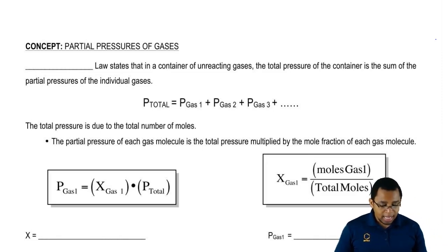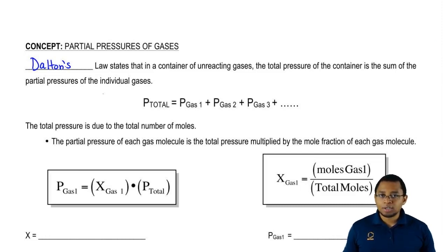Now, we're going to say Dalton's Law states that in a container of unreacting gases, that means that these gases are just bouncing off of each other. They're not connecting together to give me a new compound. The total pressure of the container is the sum of the partial pressures of the individual gases.